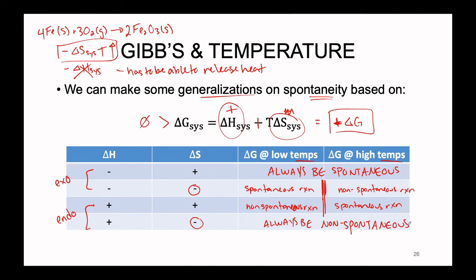In conclusion from the table: we have two situations where something is always the case — always spontaneous or always non-spontaneous. We also have two trickier situations where there is a balance to consider: whether the exothermic nature is strong enough, or whether the increase in entropy is strong enough to allow spontaneity. In rows two and three, temperature plays a huge role in whether the reaction will actually end up being spontaneous.